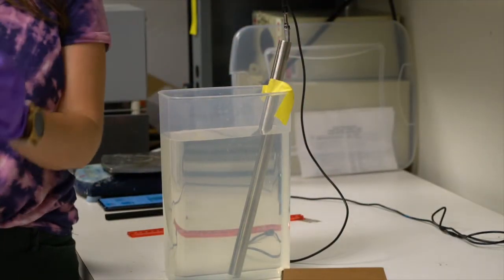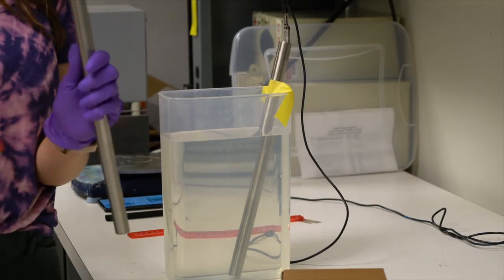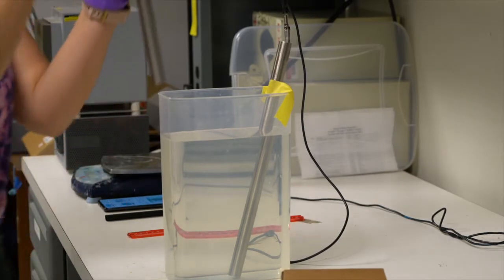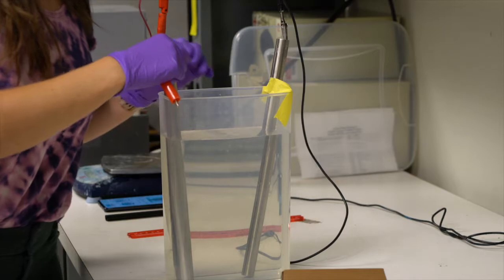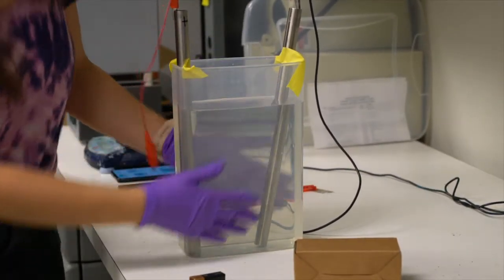Next I am going to take the positive electrode and hook that up to my positive wire and put it on the other side of this container. So that's that. We got all that set up.